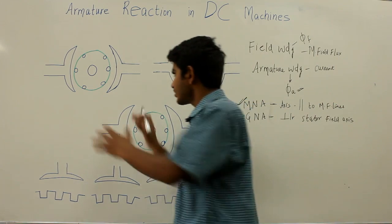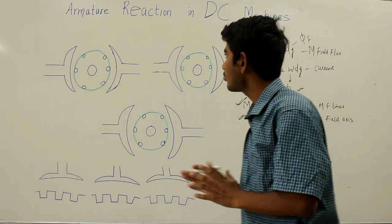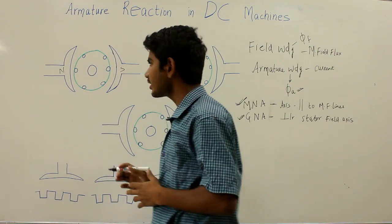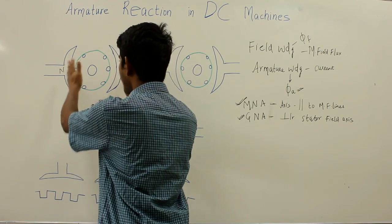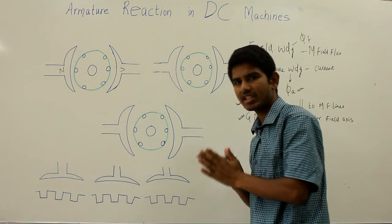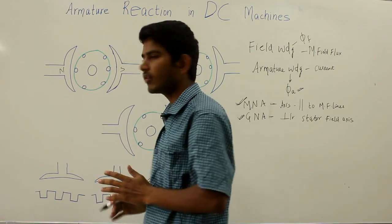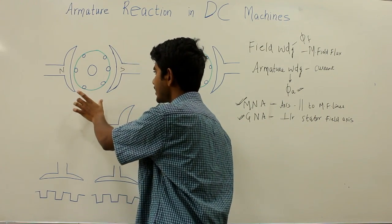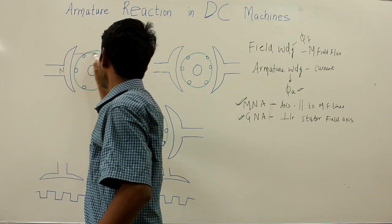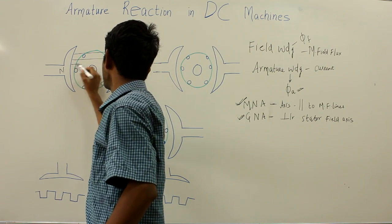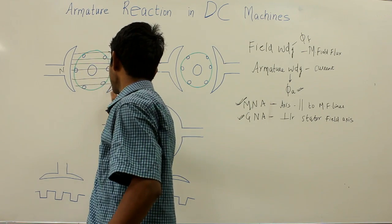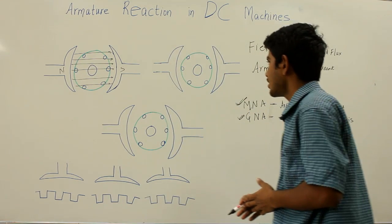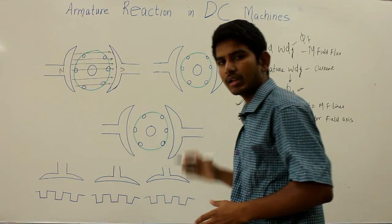Let us consider a two-pole machine with a north pole and south pole, and armature conductors placed between these two opposite poles. Initially, let us consider no current is flowing in the armature conductors and only the field poles are energized. We can see the magnetic flux lines are uniform and symmetrical to the polar axis and they are uniformly distributed.